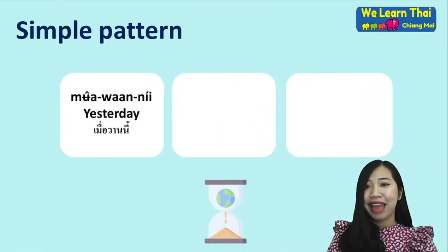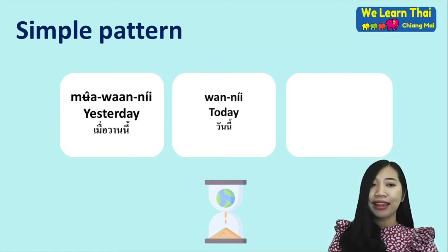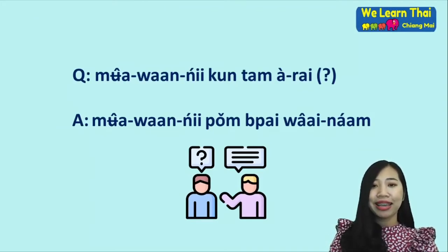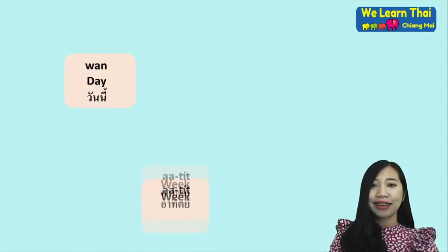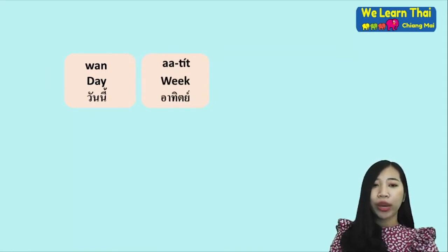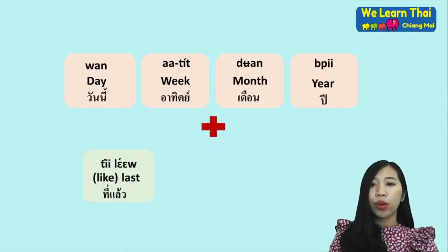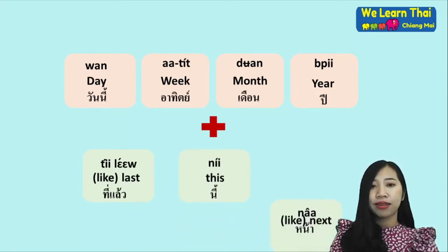Simple pattern: mưu wa nii means yesterday, mưu wa nii means today, and prung nii means tomorrow. For example: mưu wa nii koon tham aray kha? — what did you do yesterday? mưu wa nii di chan pai wai nam kha. We also have: wan — day, aa thit — week, duean — month, and pii — year.